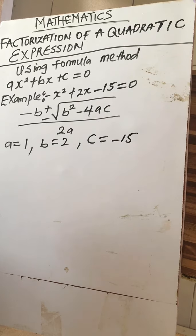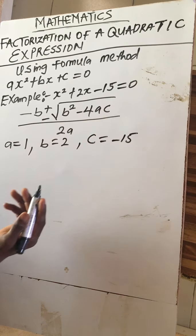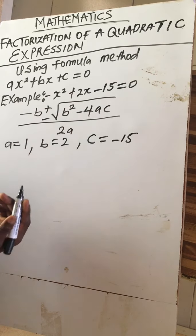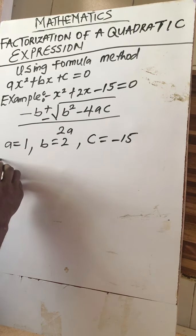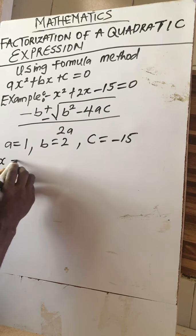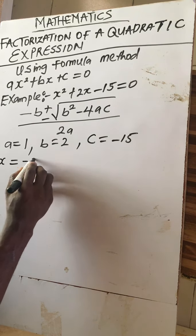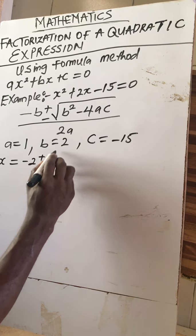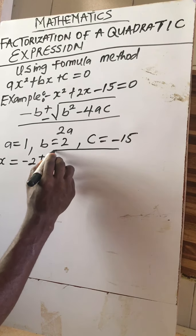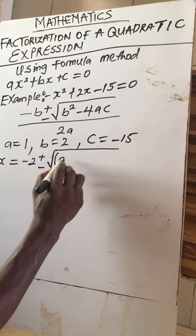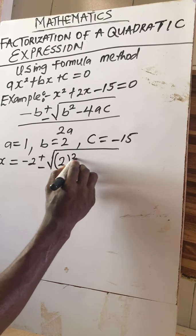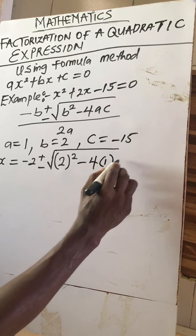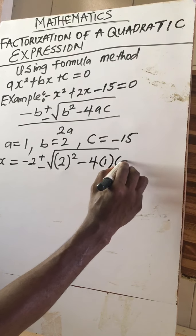Now we substitute into the formula to solve the equation. We have x equal to minus negative two, plus or minus the square root of two squared minus four times one times minus 15.